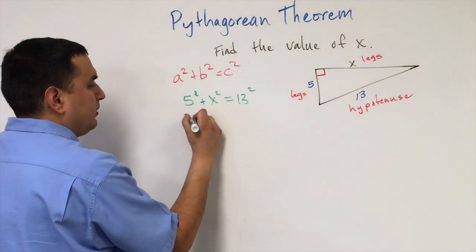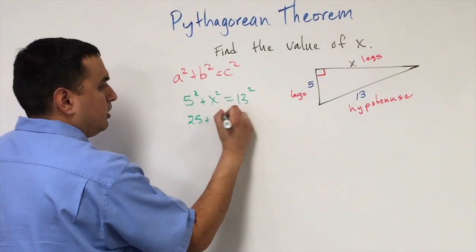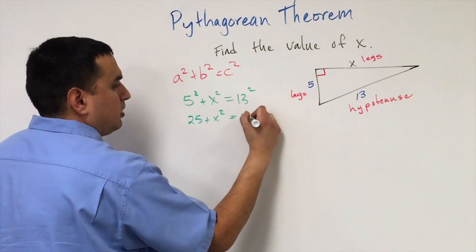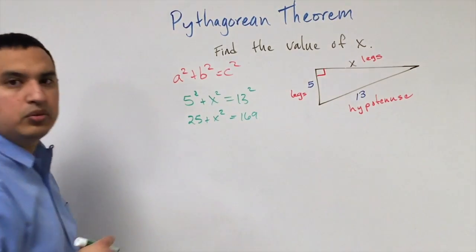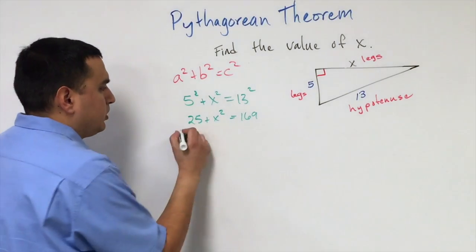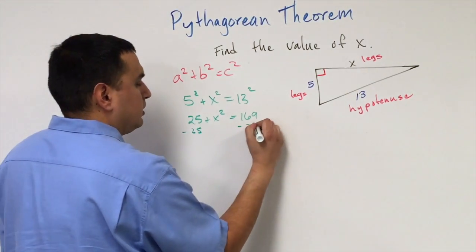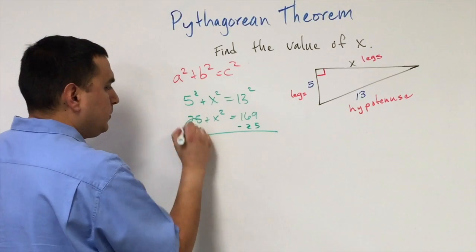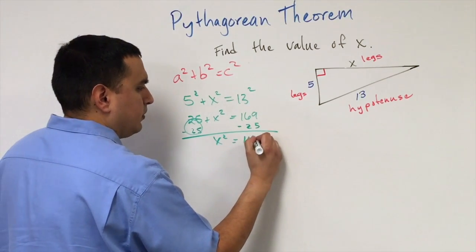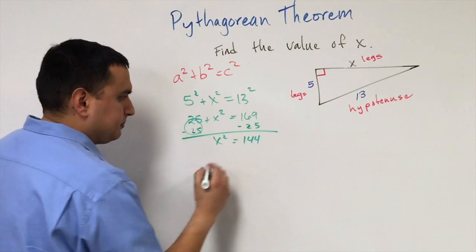5 times 5 is 25. 13 squared comes out to 169. Now I want to subtract 25 from both sides. That goes to 0. x squared is equal to 144.